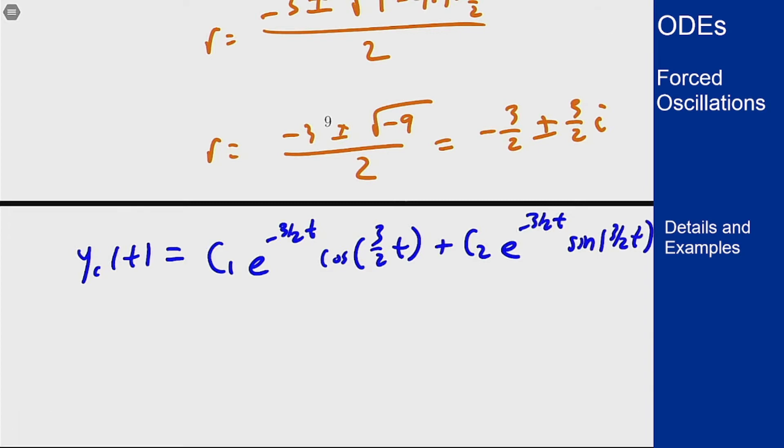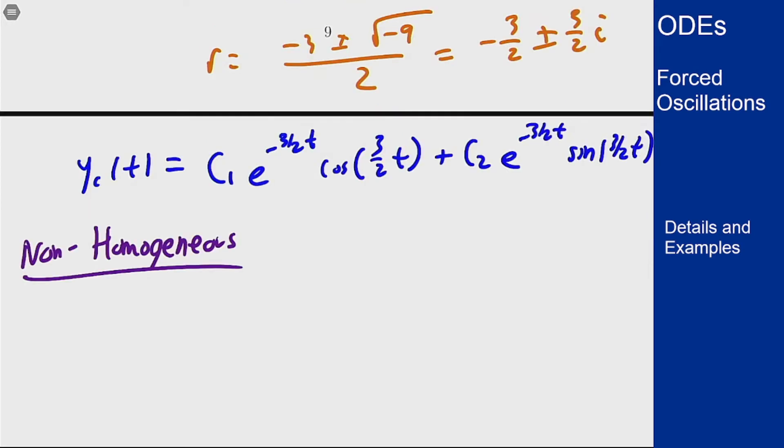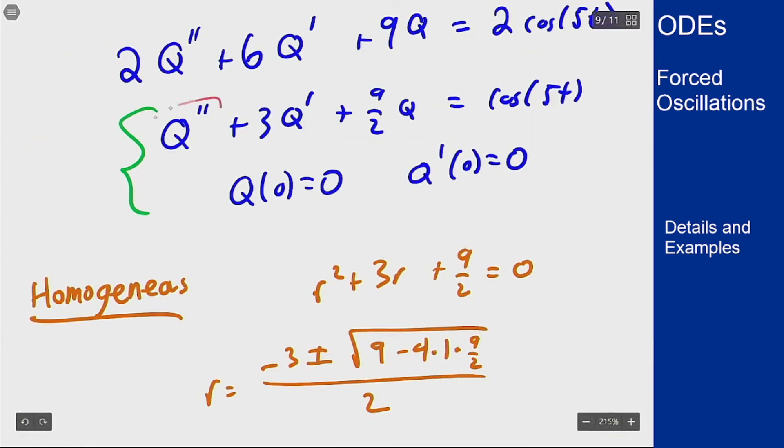Now before we can work with the initial conditions we have to find the non-homogeneous solution first. For the non-homogeneous part, our right hand side was cosine of 5t, so our guess should be A cosine 5t plus B sine of 5t. I'm going to work with the version after I've divided by 2, so I'm not going to have 2 cosine 5t, I'm going to have just cosine 5t on the right.